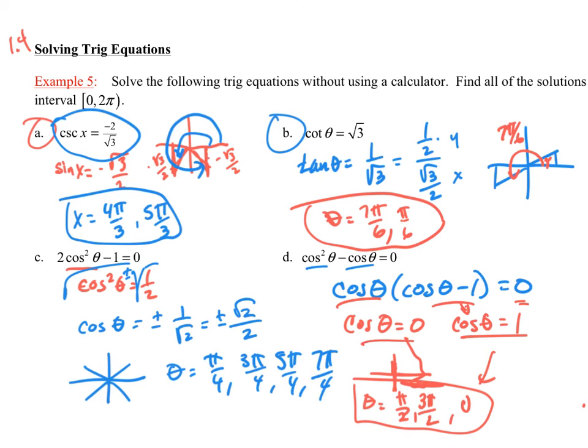Now if I take the square root, I get cosine theta equals zero, cosine theta equals one. Cosine of theta is equal to one at zero, and cosine of theta is equal to zero at these two values right here. So this would be my solution.